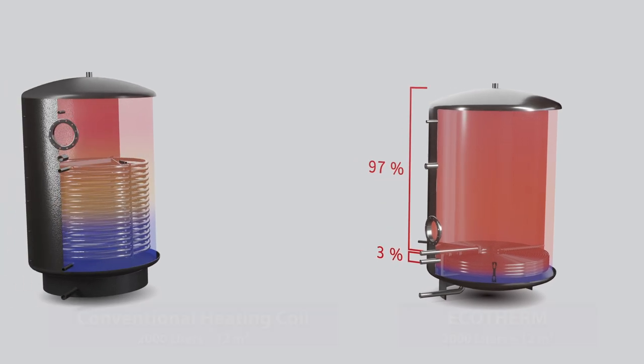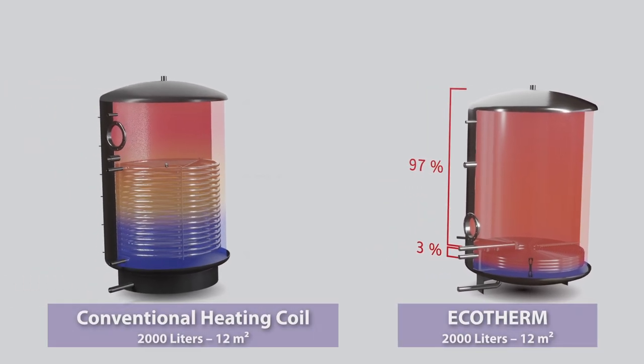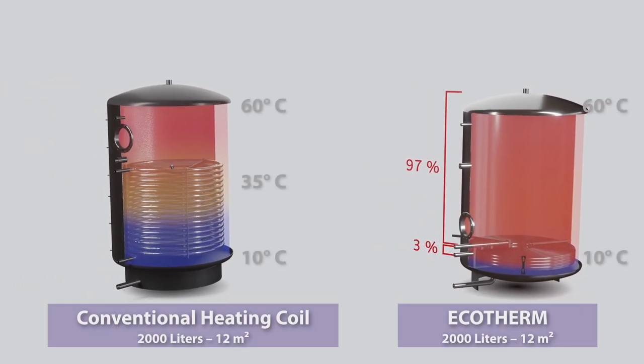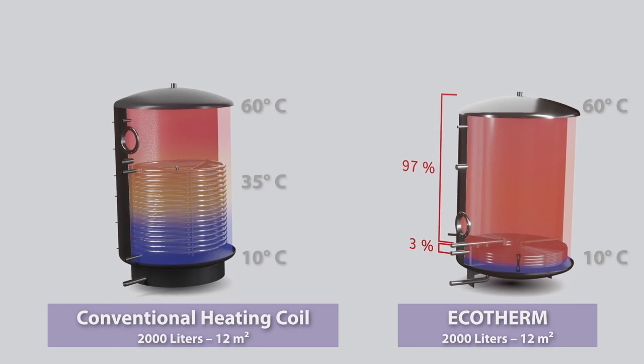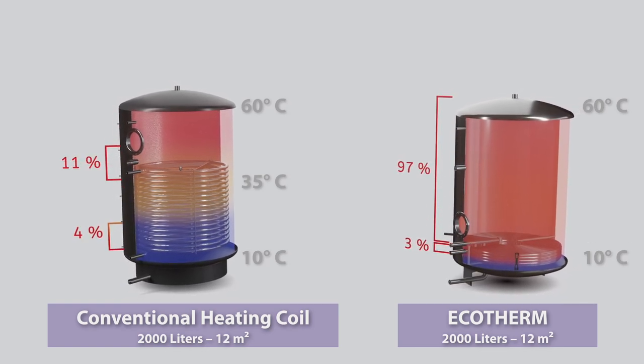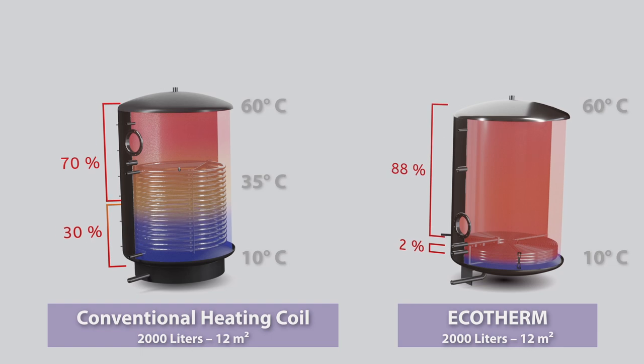Conventional heating coils, on the other hand, are located in a mixed temperature zone between 10 and 60 degrees. This minimizes the heat transfer rate and the standby volume is reduced to about 70%.